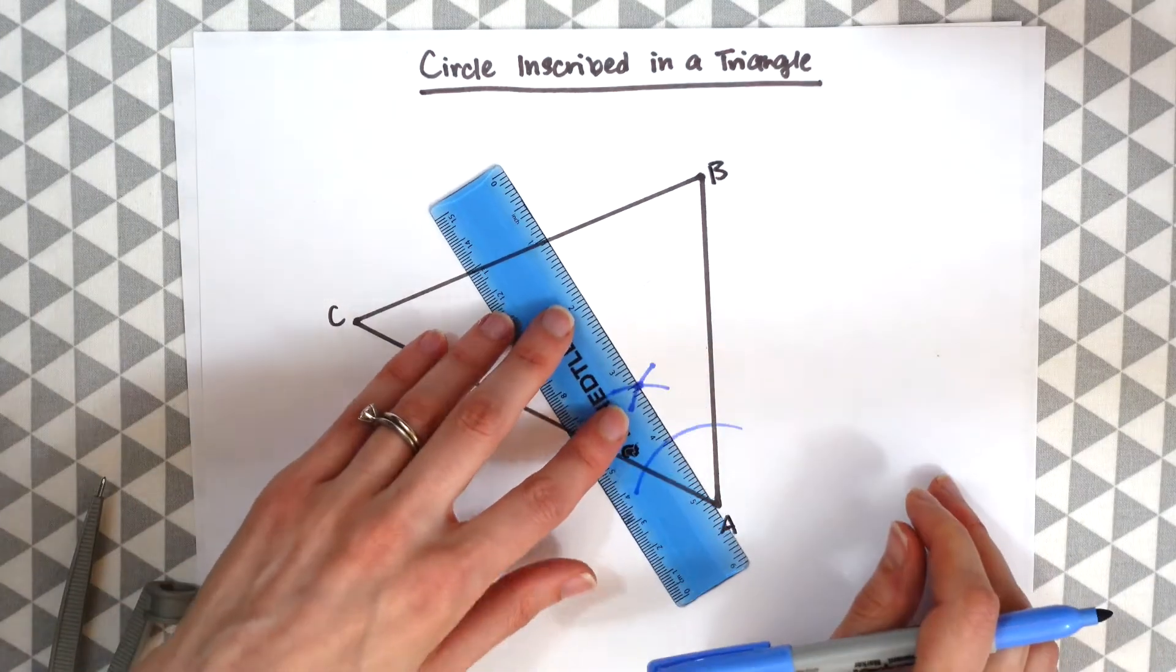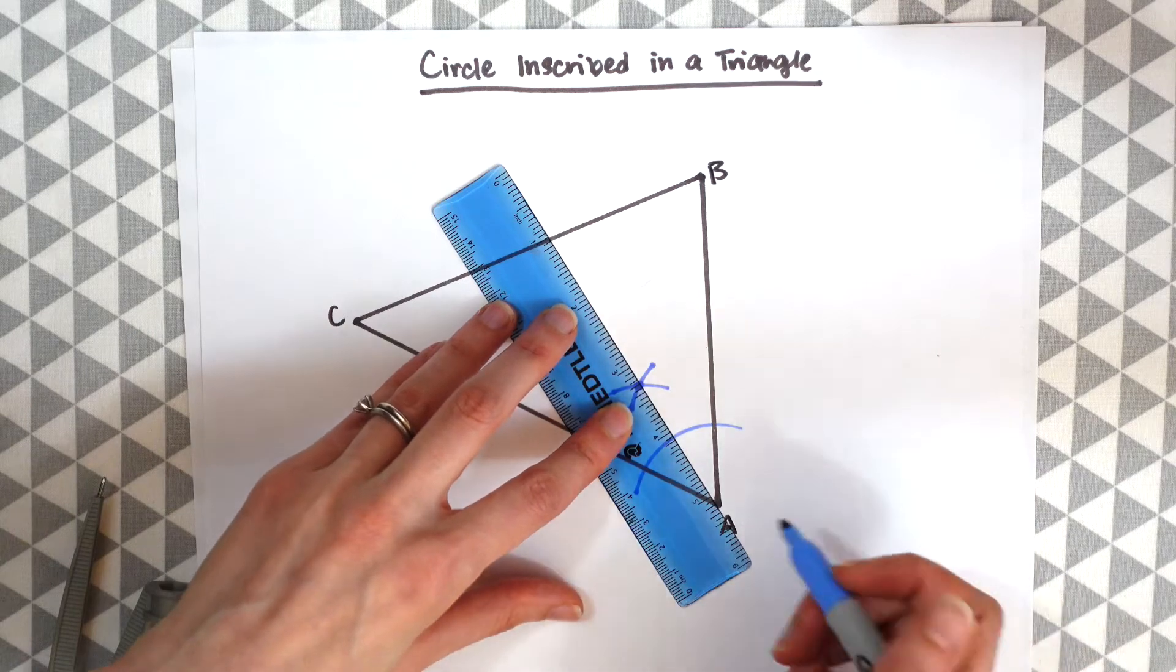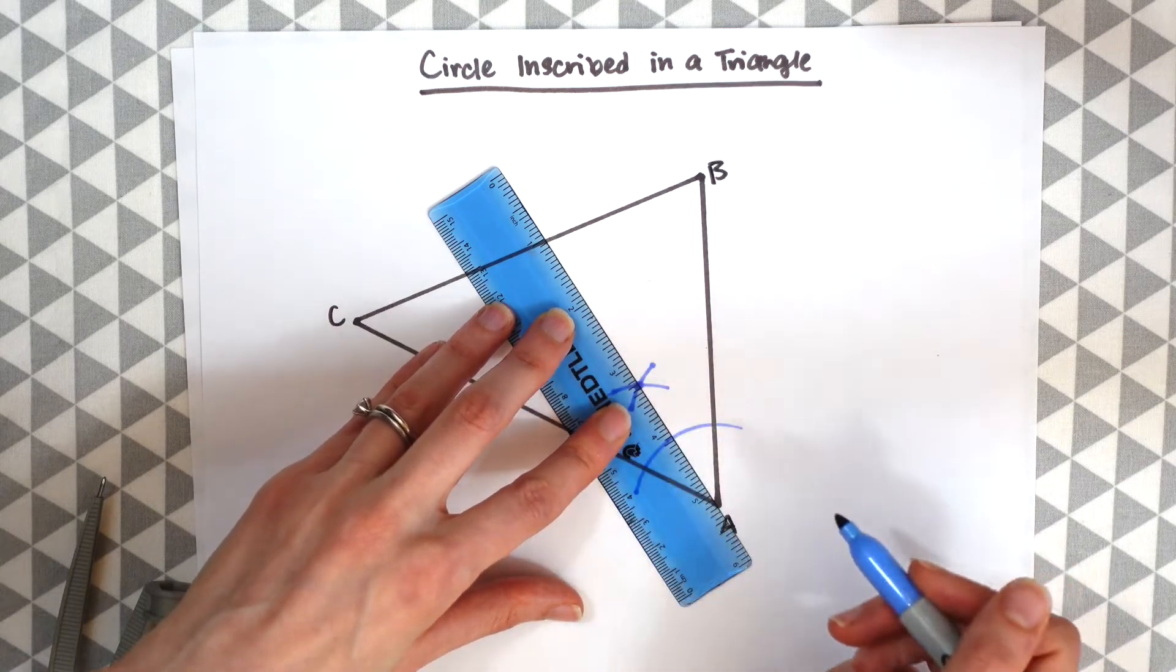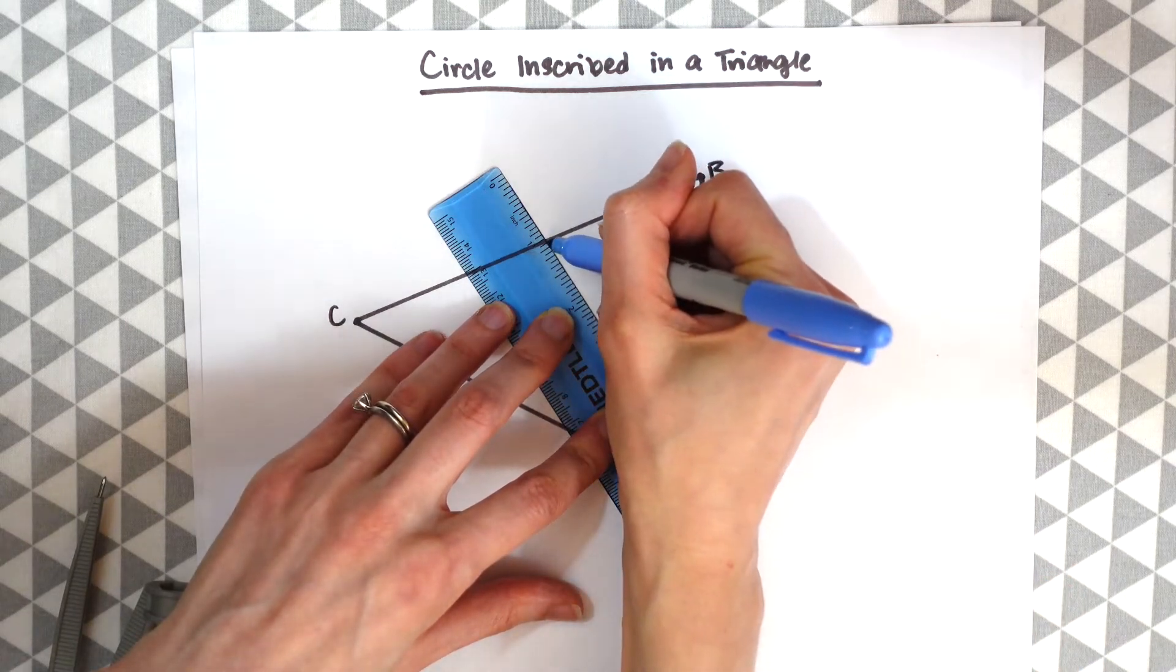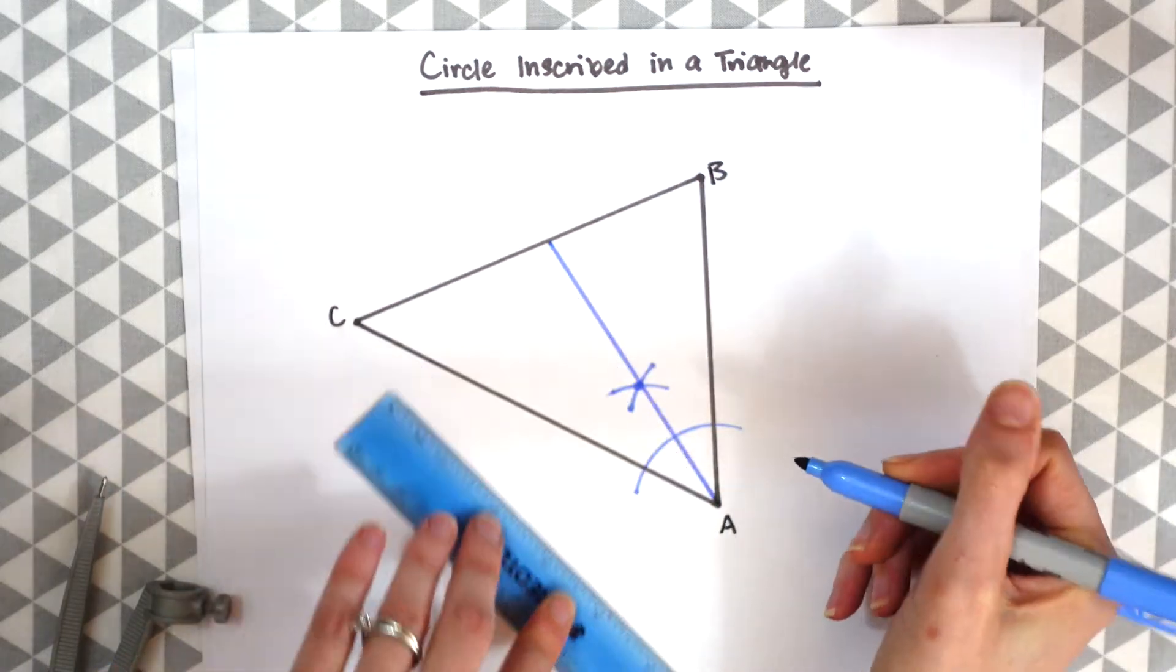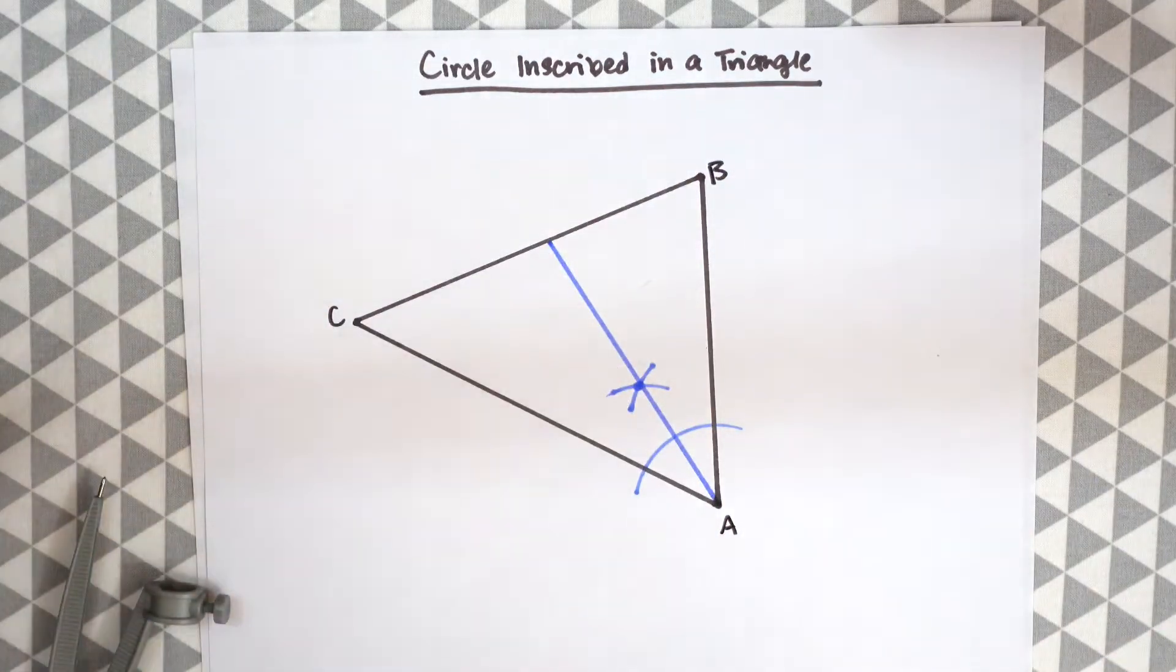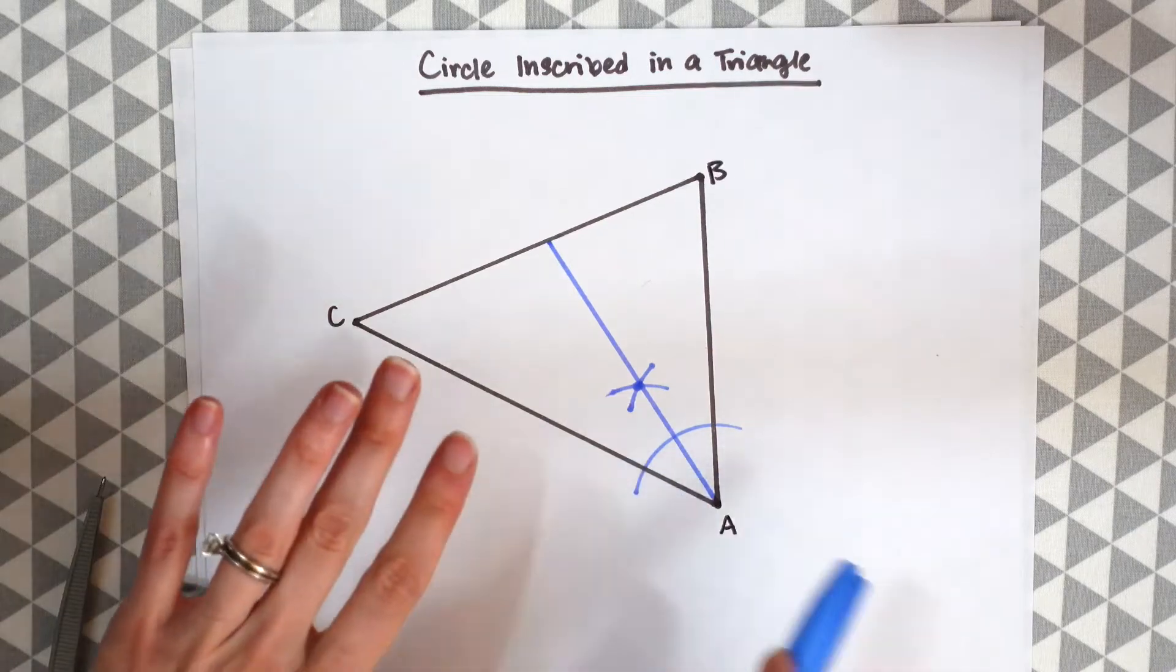We're going to now use a ruler and align our angle A with the point of intersection we just made and draw a line. And we created our angle bisector, bisecting the angle into two equal parts.